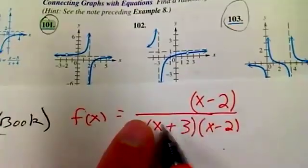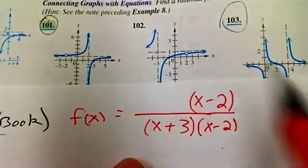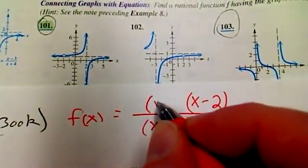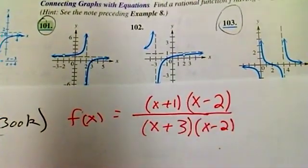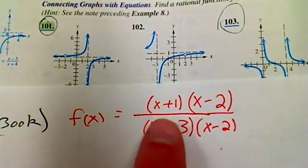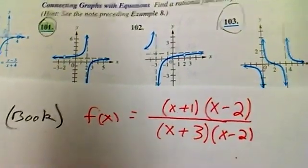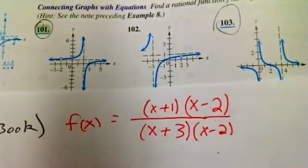We're right here, so we know since we have an x-intercept here of negative 1, I have to have an x plus 1 up here, right? Because remember any x-intercepts we find that from what we have up top.